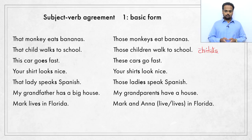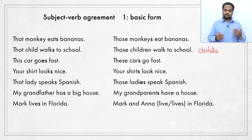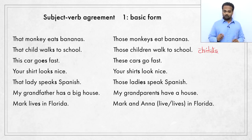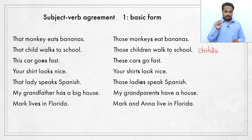Here's one more example, and this one is a little tricky. 'Mark lives in Florida.' Mark is the name of one man, so we say 'lives' — singular verb. But what if Mark has a wife, Anna? Would you say 'Mark and Anna lives in Florida' or 'live in Florida'? Mark is one person, singular; Anna is one person, singular. However, Mark and Anna are two people, so this is a plural form — we need a plural verb. Remember that a plural verb does not take an S. So: Mark and Anna live in Florida.